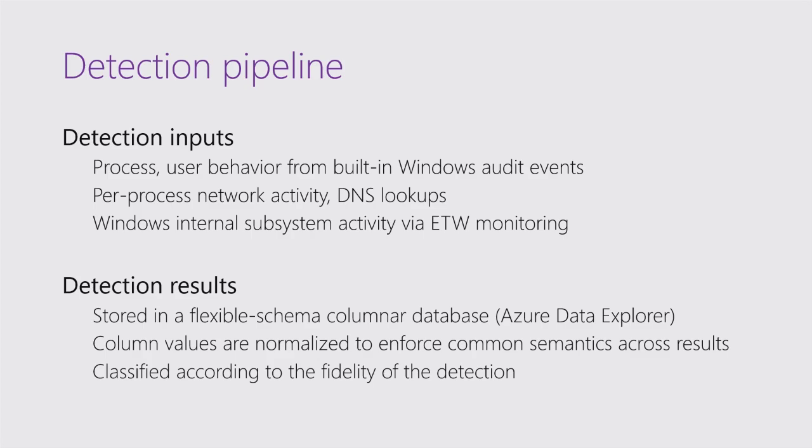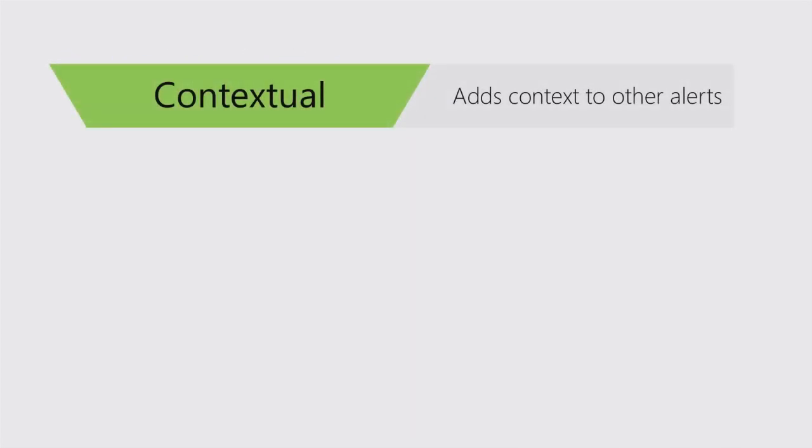We do normalization to make sure all column values have consistent semantic meaning — username is a username, not a domain, not a UPN; it's lowercase. Domain names are uppercased. Host names are always lowercase and normalized. Then we classify our detection results — our alerts — according to the fidelity of that detection. We have many alerts that just give us context; we never page anybody about these, but we show them in context with other results so analysts can make better decisions.